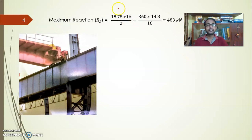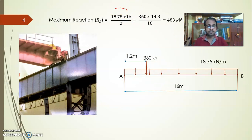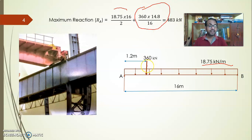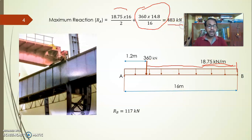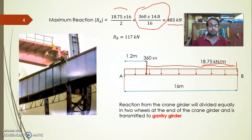Reaction RA is calculated as (wL/2) for the UDL self-weight and (W·b/L) for the eccentrically placed point load. The eccentricity distance is 16 minus 1.2 = 14.8 meters. RA comes out as 483 kN and RB as 117 kN.